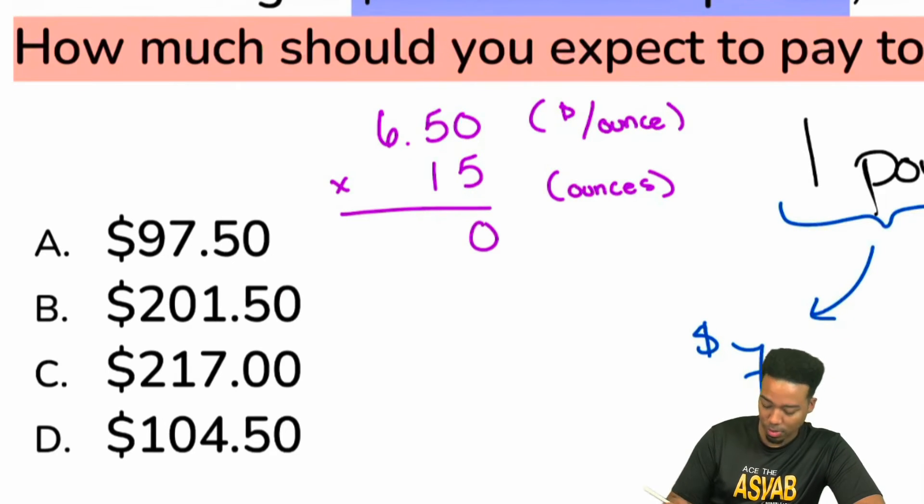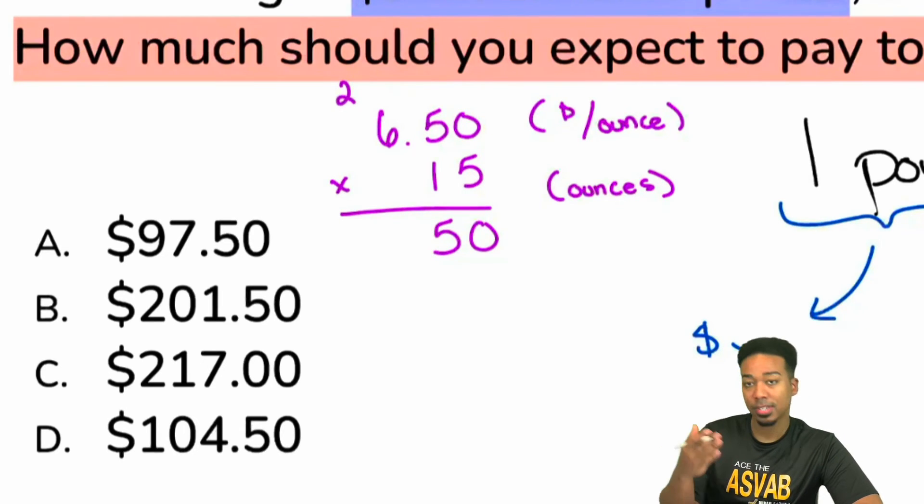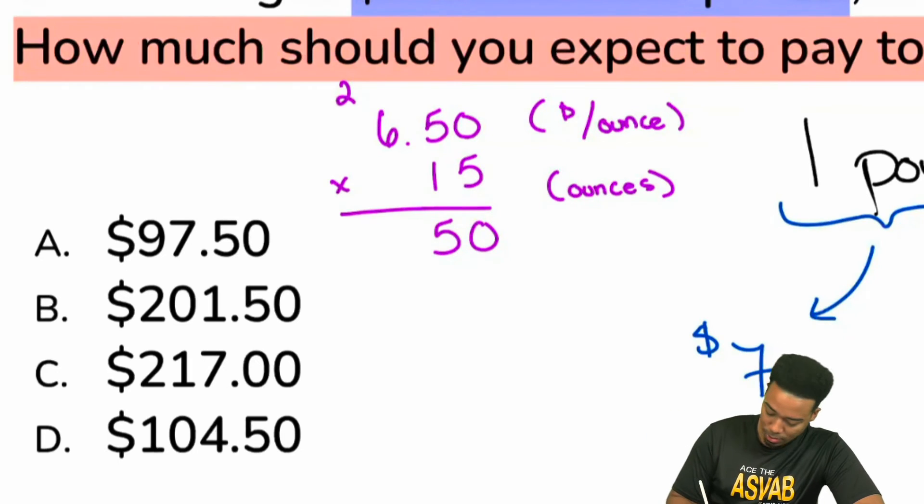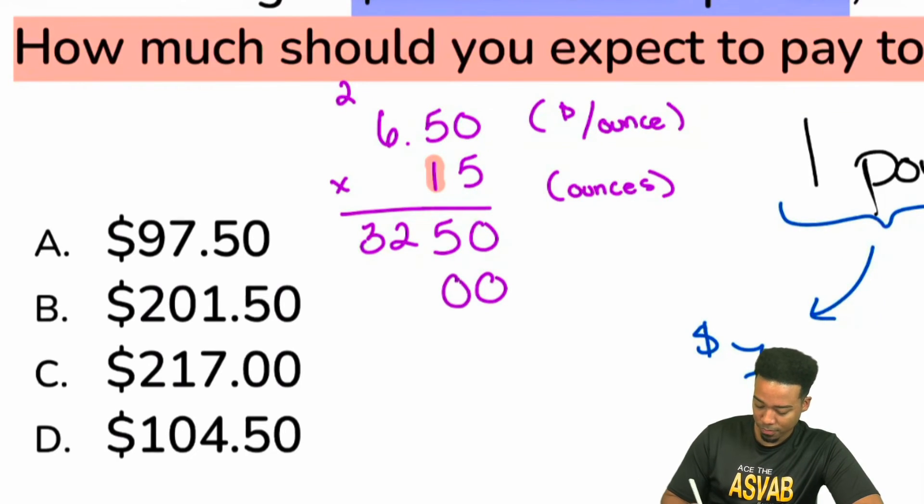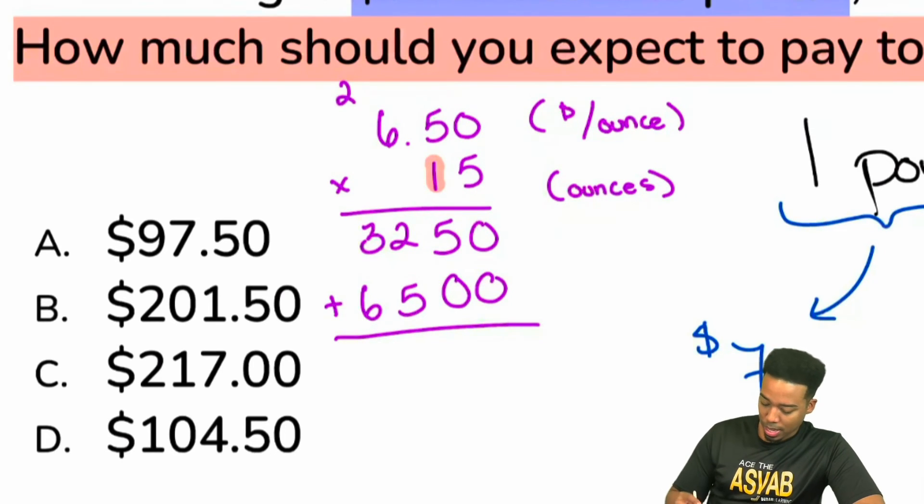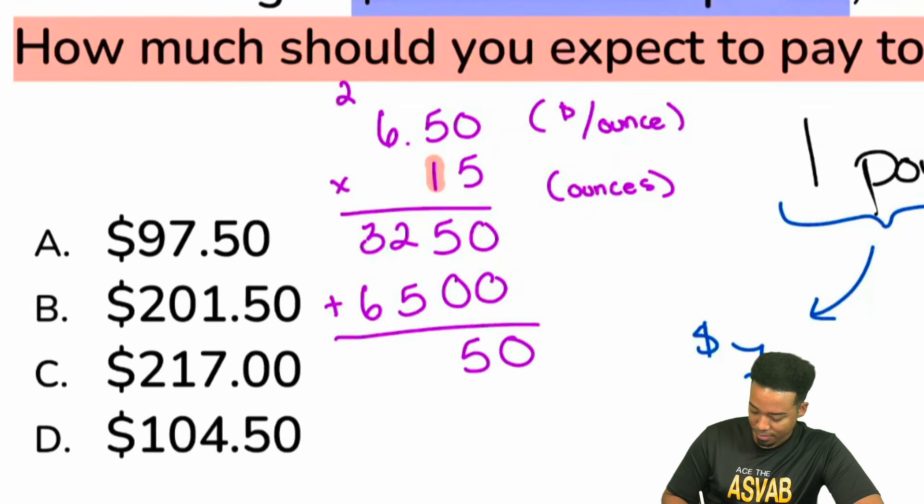We do the math. Zero times five, that's going to be zero. Five times five, that's going to be 25. Six times five is 30. Carry the two, that's 32. Then bring a zero down to go to the next line. We are now working with this here. So, zero times one, five times one, six times one. And so then from there, we'll go ahead, add that all up. And what we have here, my party people, is going to be zero, five, seven, nine.